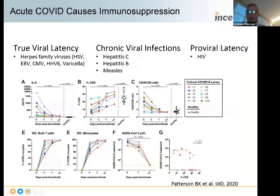The CD8 T cell deficiency was on the order of the deficiency of CD4 T cells in HIV-AIDS, which caused these patients with acute COVID to be supremely immunosuppressed. Not only was there a decrease, but the function of CD8 T cells, which were exhausted by this infection, also didn't produce normal levels of Granzyme, which is their mechanism for killing off virally infected cells and cancer.